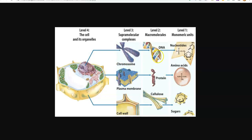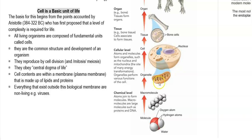The monomeric units of nucleotides form into the macromolecules of DNA or RNA. These are further organized at a higher level to form chromosome structures, which are present in the nucleus of the cell. All of these in turn make up a cell and its organelles. The formation up to the organelle level can be better understood by studying the cellular level of organization of biomacromolecules.